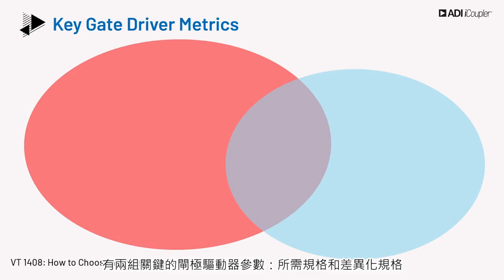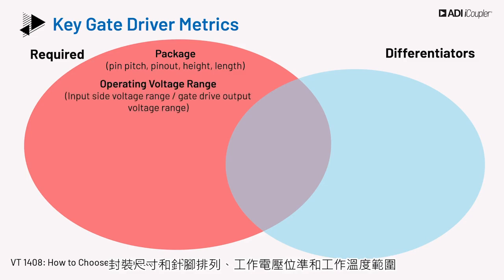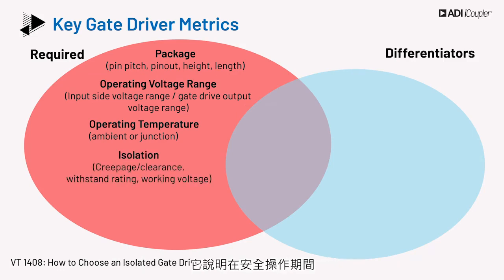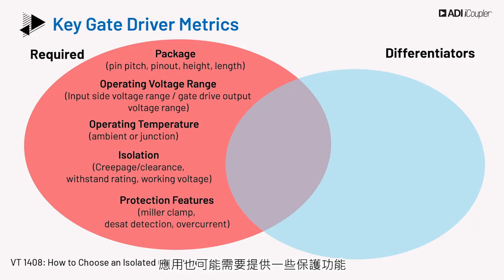There are two groups of key gate driver parameters: the required specs and the differentiating specs. Similar to common considerations for most electronic parts, the required specs for isolated gate drivers are package size and pin out, operating voltage levels, and operating temperature range. Some parameters specific to gate drivers are isolation rating, which states the voltage that can be applied between the input and output side across the isolation barrier during safe operation. Creepage is another parameter, which indicates the distance between the isolated pins of the package and is related to the safety specs. There are also some protection features which may be required in an application.